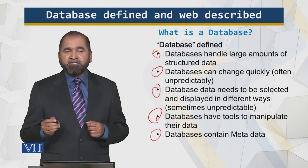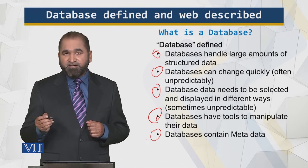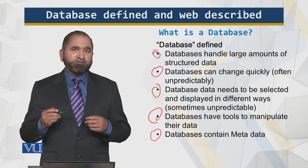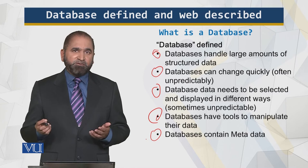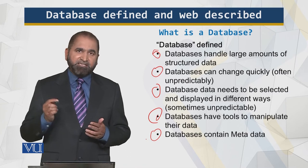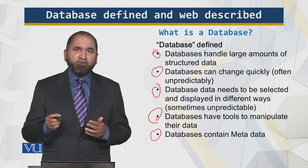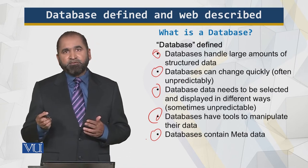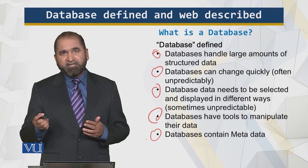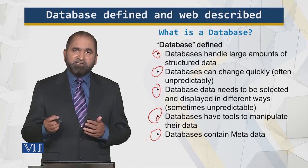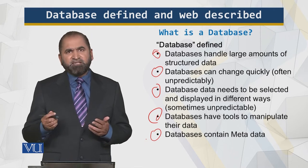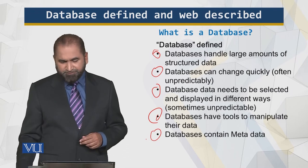Databases contain metadata — metadata is the data about the data itself. How many tables are there? What are the names of the attributes — is it 'gender' or is it 'sex'? What are the data types — is the age stored as an integer, or is it stored as a real number?